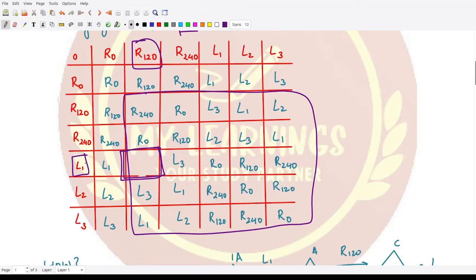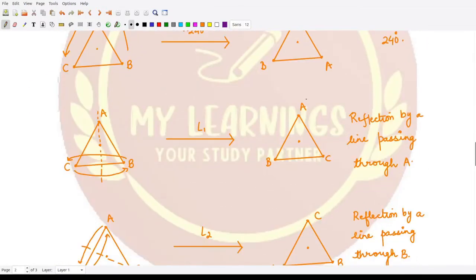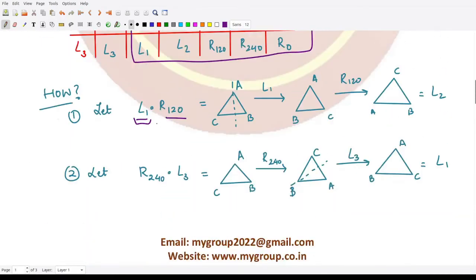What is L1? L1 is this triangle ABC with A here, B here, C here. On the given triangle ABC, we are applying this reflection, so C would come to this place. After applying L1, we are applying R120.